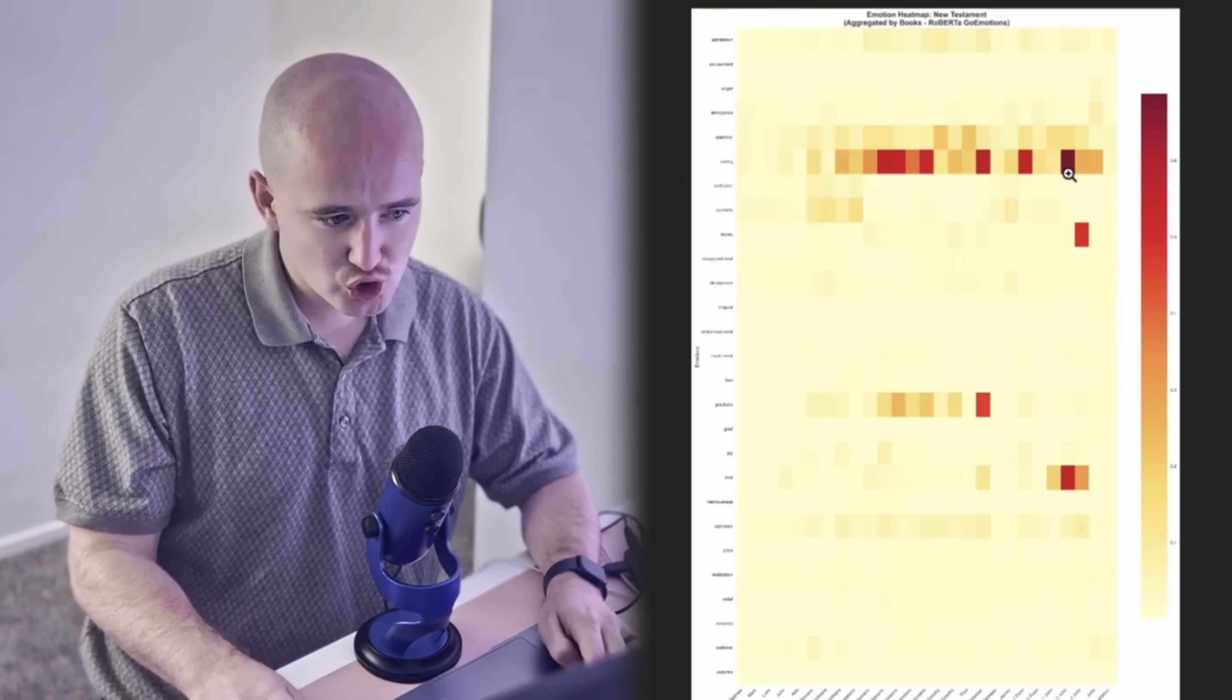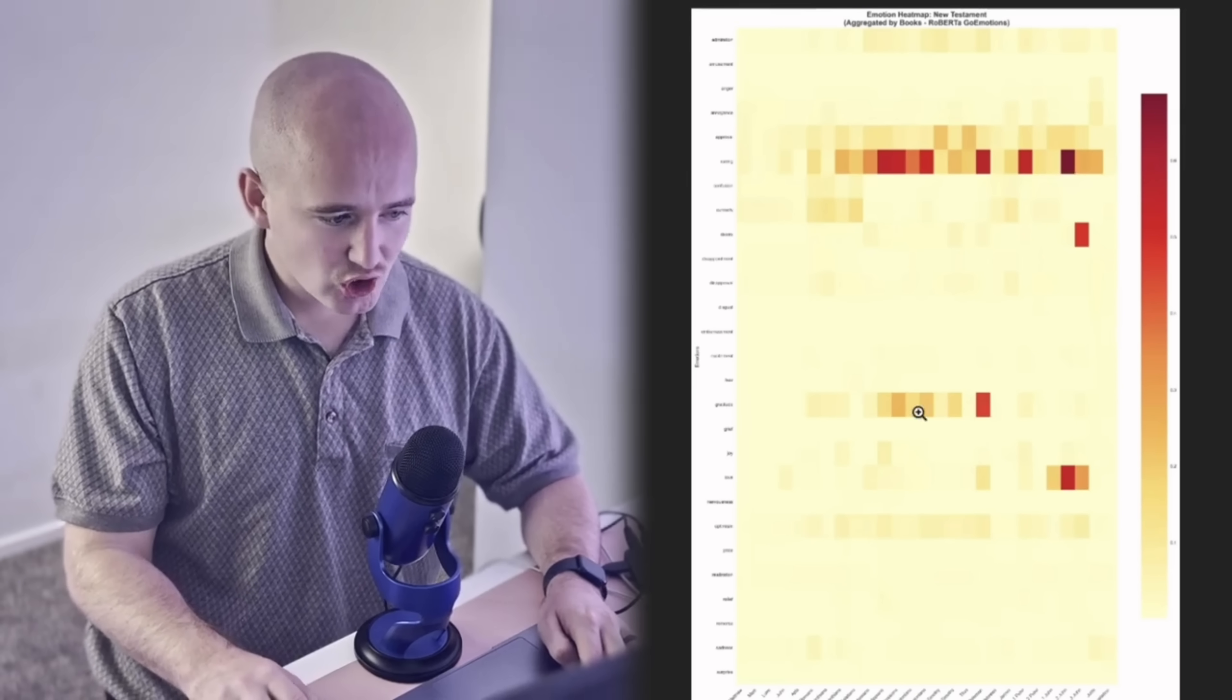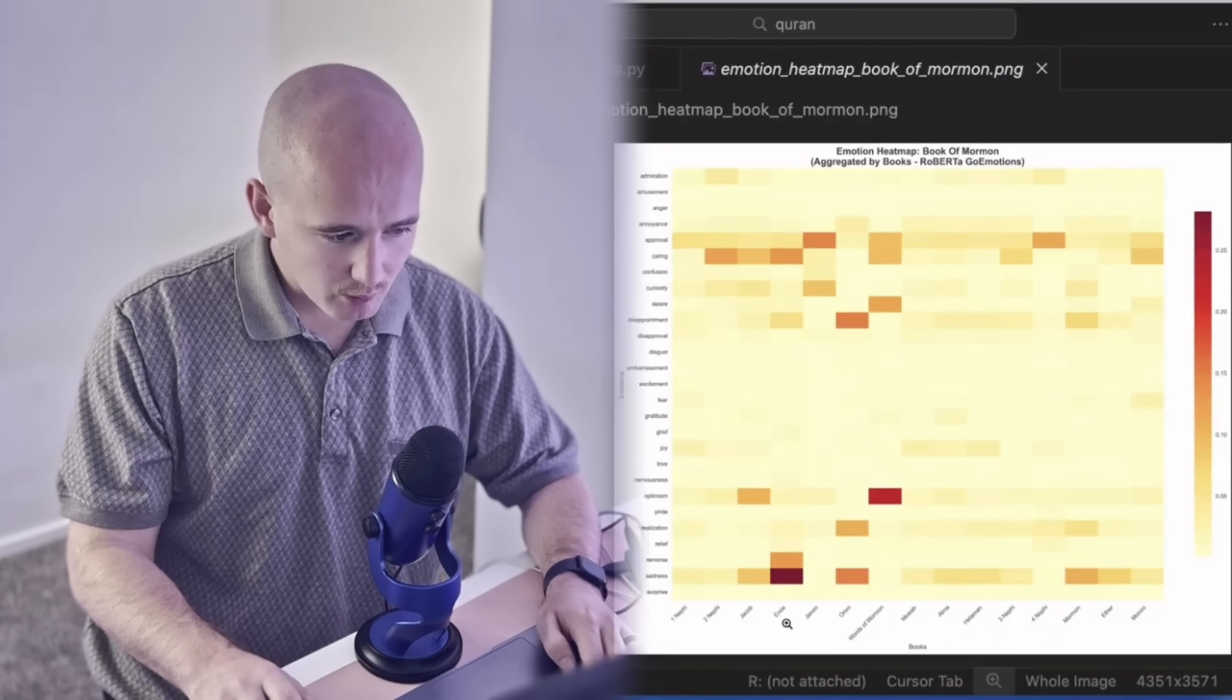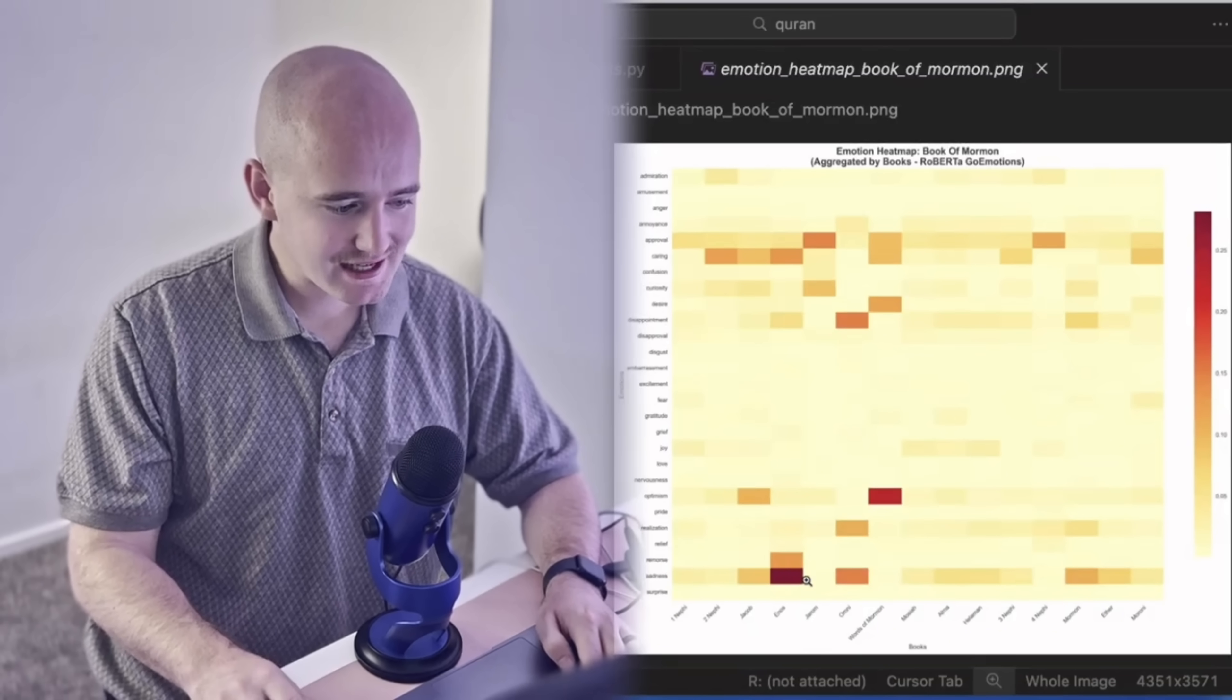And so all of the texts are actually very emotionally similar. And so like I mentioned before, while the majority of the text is neutral, there are different hotspots for different emotions. For example, the text is really small, but 2 John is extremely caring. Or Philemon has an extremely high gratitude score. In the Book of Mormon, the Book of Enos has an extremely high sadness score. So that was the first thing that I wanted to do. I just wanted to look at the emotional analysis of these books. And I think it's very interesting that all of these books are extremely similar emotionally.